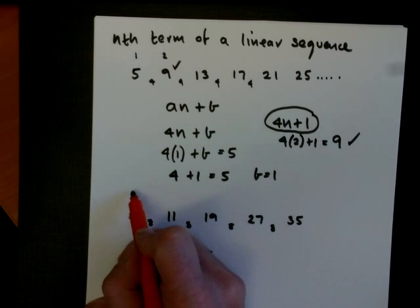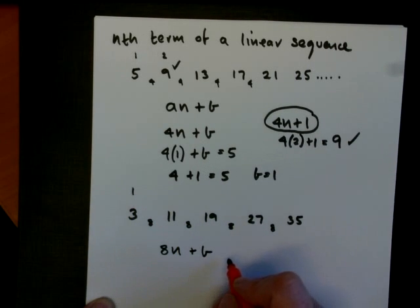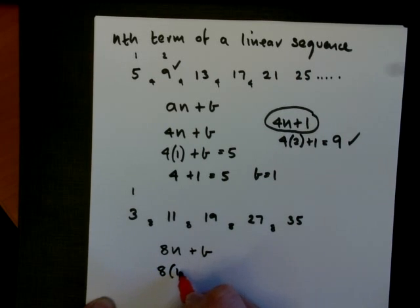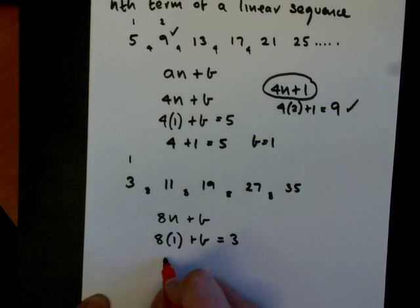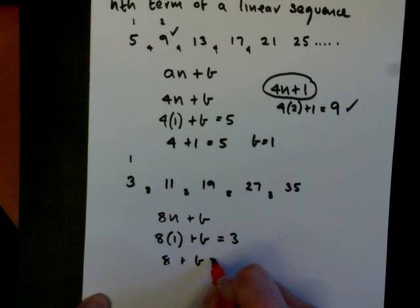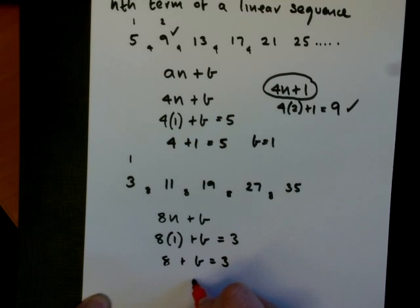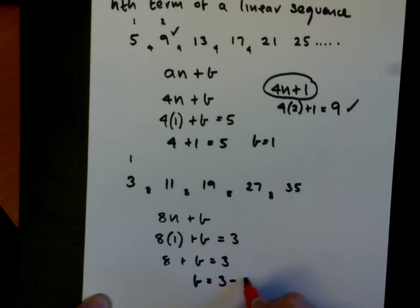Now my first term is 3. So 8 times 1 plus the number I'm trying to find out equals 3. So 8 plus b equals 3. So let's move the 8 to the other side. So b will equal 3 minus 8.